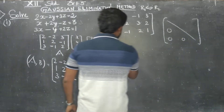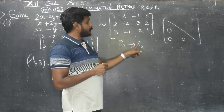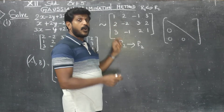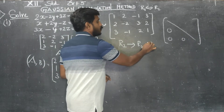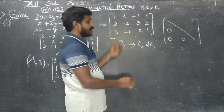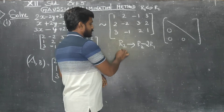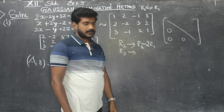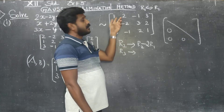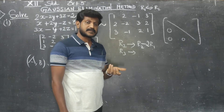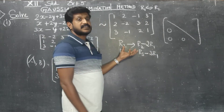Next, R2 is updated. Then R3 is equal to R3 minus 3 times R1. This is the next elementary transformation.